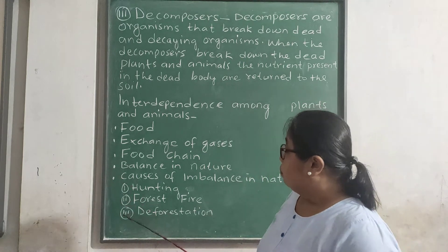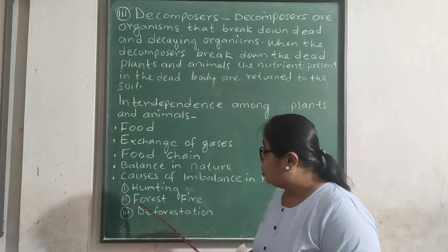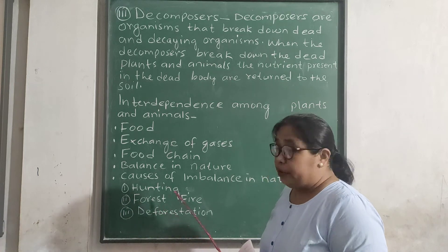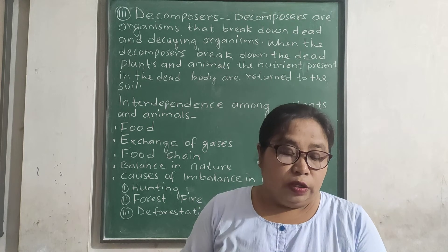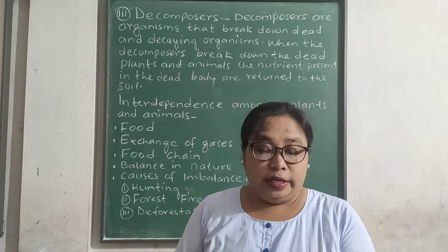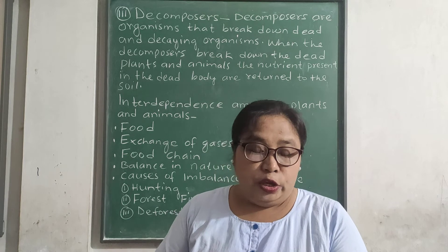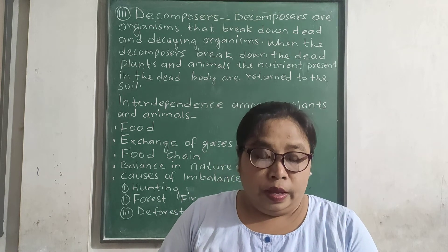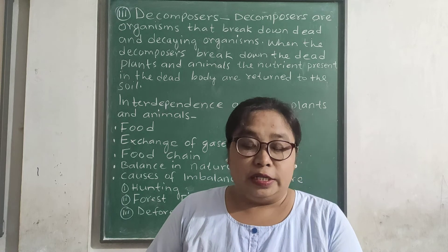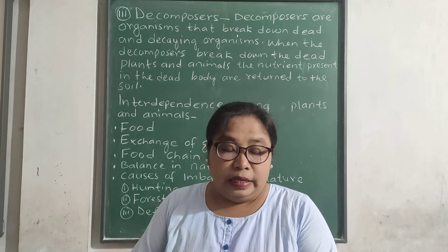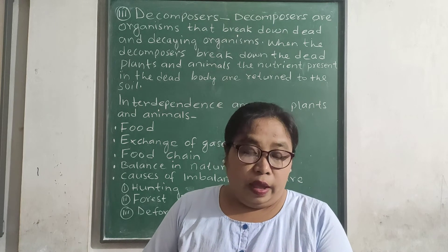Number two: forest fire. Forest fire occurs due to volcanic eruption or lightning, but it is also caused by human activities. Forest fire leads to the killing of all living organisms present in it and destroys the homes of animals.